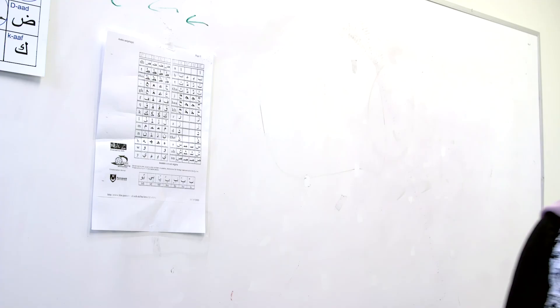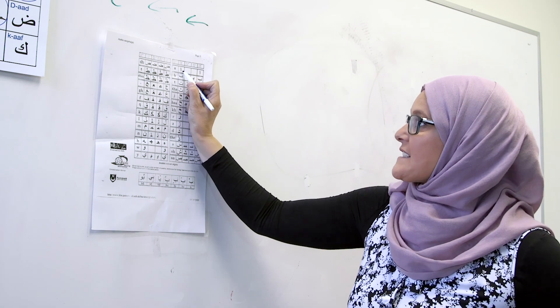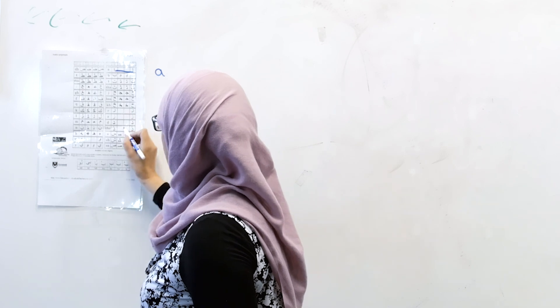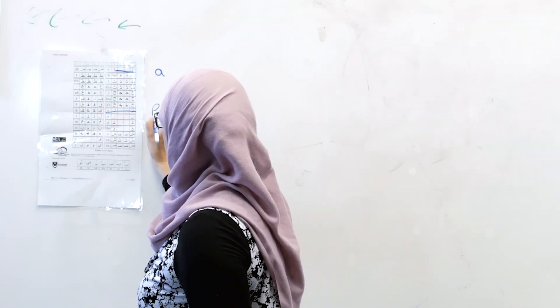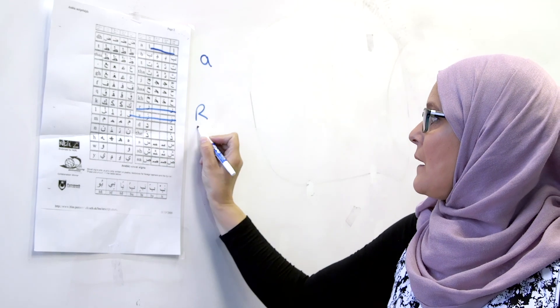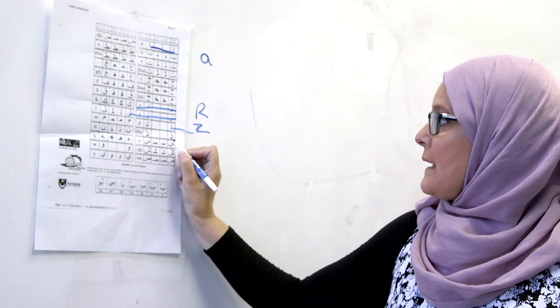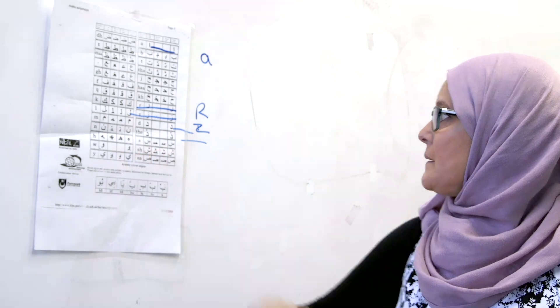Elif - we have six letters that never connect left side. Elif, a, the ra, the za, the da, the da, and the wa. Remember?